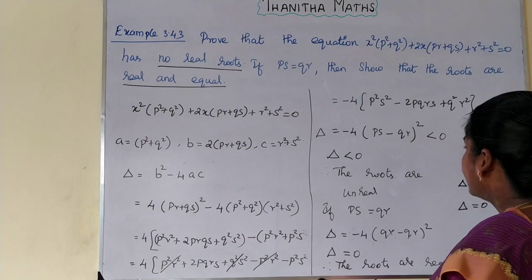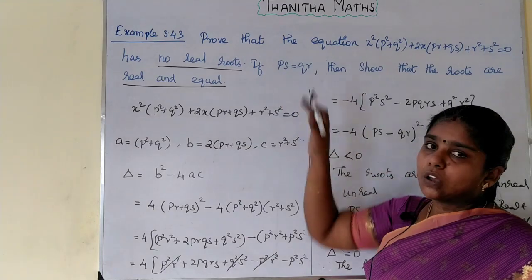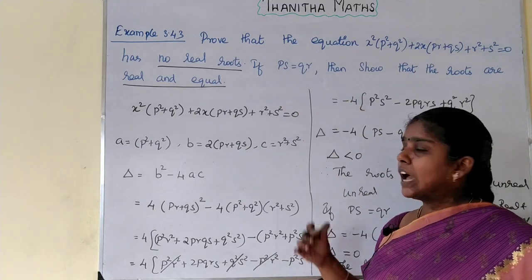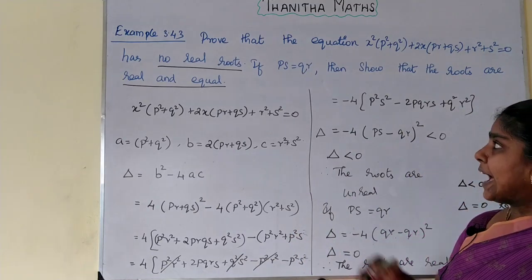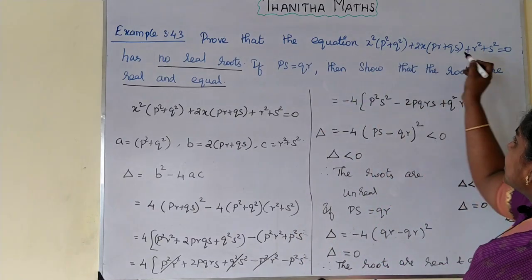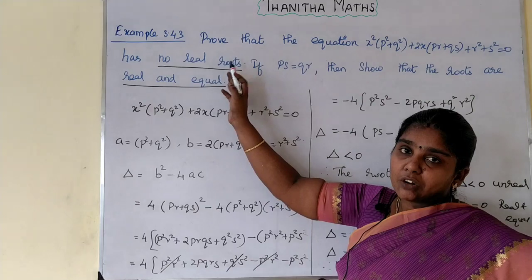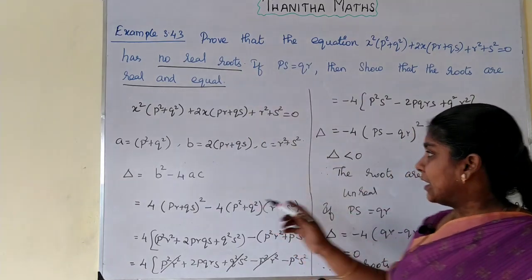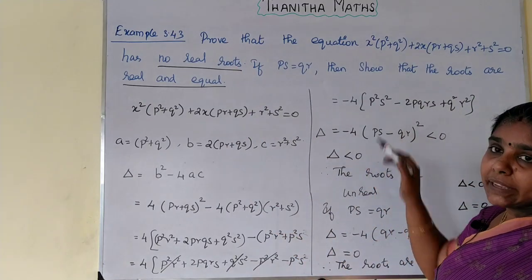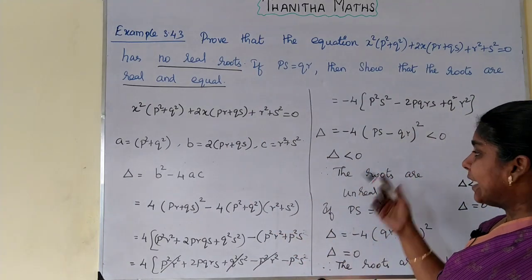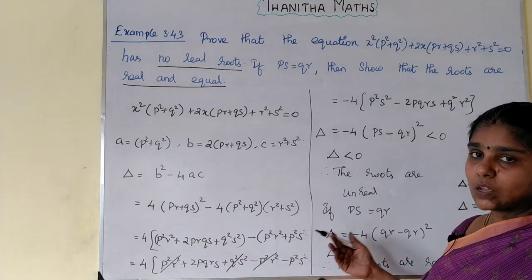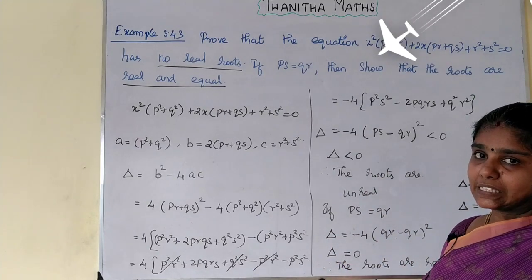In conclusion: when ps is not equal to qr, the equation has no real roots. And when ps equals qr, the roots are real and equal. Both conditions are proved. This is our required answer.